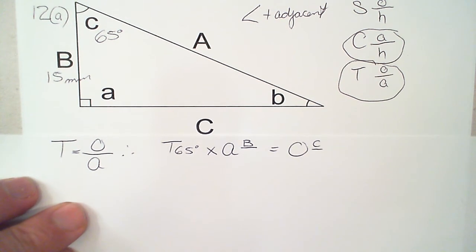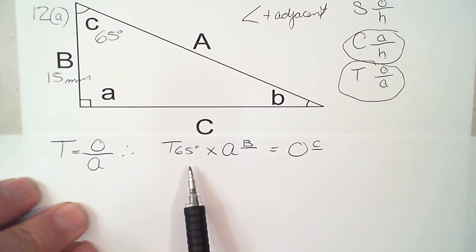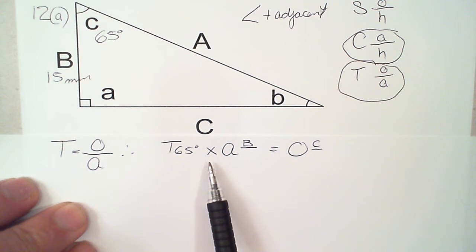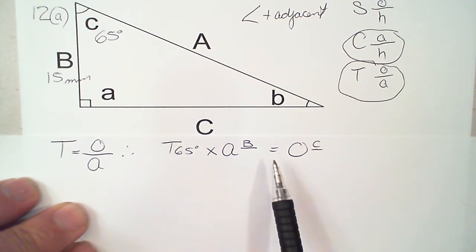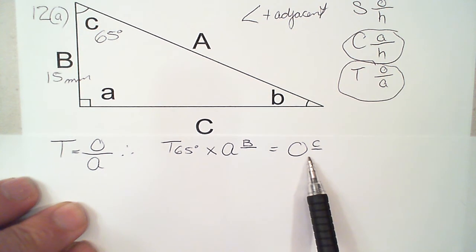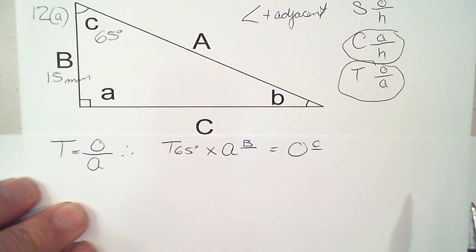So what do we have? We have tangent 65 degrees multiplied by 15 millimeters equals the opposite, which is Line C. Work that out. See if you get the same answer that I do. Right, go ahead.